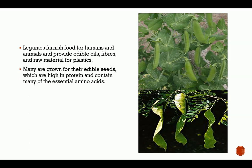Legumes furnish food for humans and animals and provide edible foods, fibers, and raw materials for plastics. Many are grown for their edible seeds, which are high in protein and contain many of the essential amino acids. Legumes are naturally high in protein content — in fact they have about 60 to 70 percent crude protein. They are the crops with the most protein of any crop consumed by humans. They also have the benefit of replenishing the soil with nutrients when used as cover crops or grown alongside other crops, whereby they fix nitrogen into the soil.